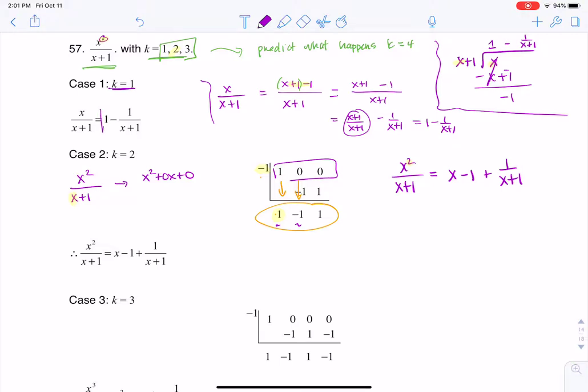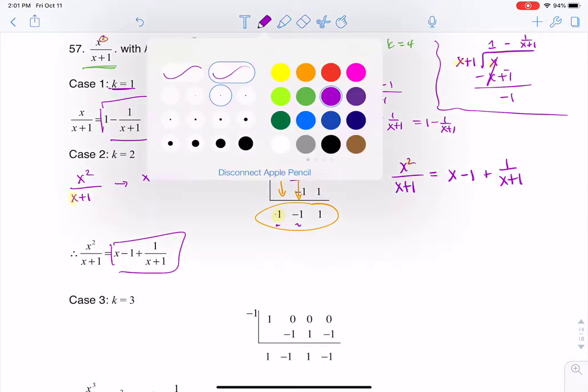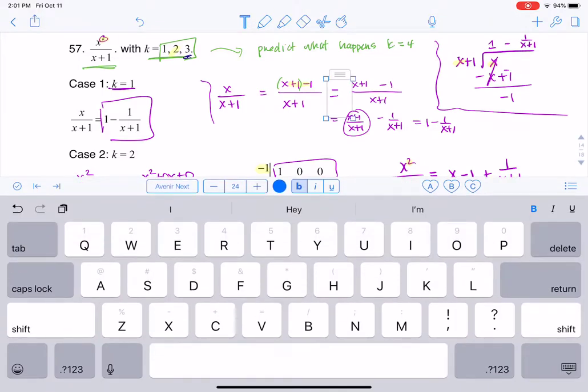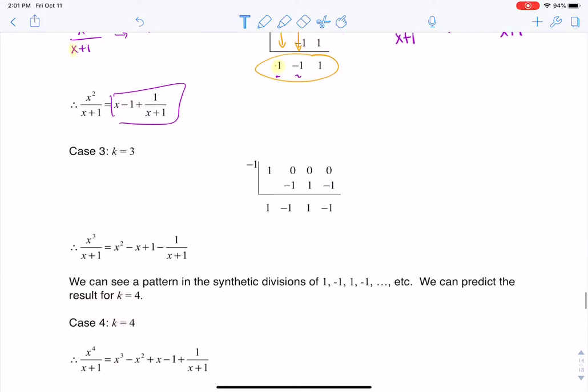All right, so just keeping in mind what we have, here was the case when x was equal to 1, here was the case when x was equal to 2. I personally wouldn't have seen a pattern yet, but I'm going to try this now with k equaling 3. So now let's go run this with k equaling 3, and let me move this down.